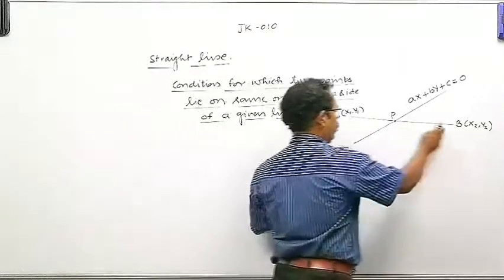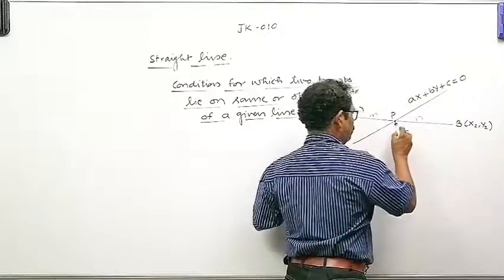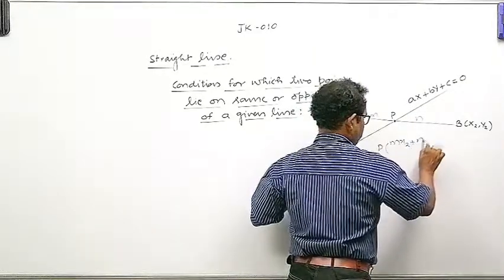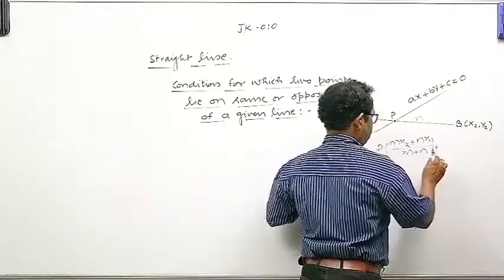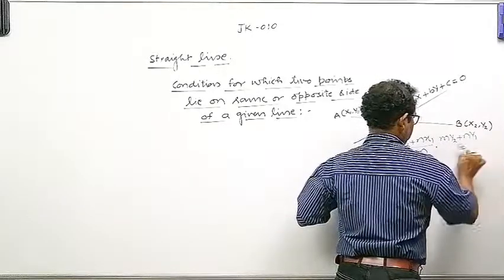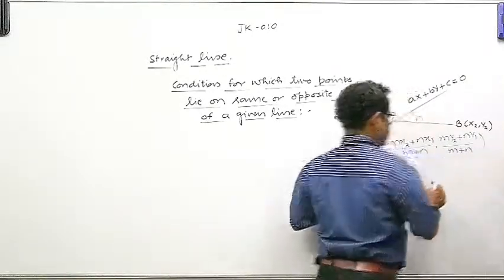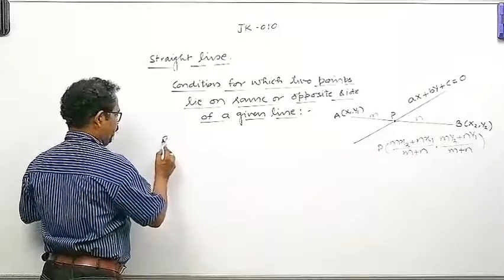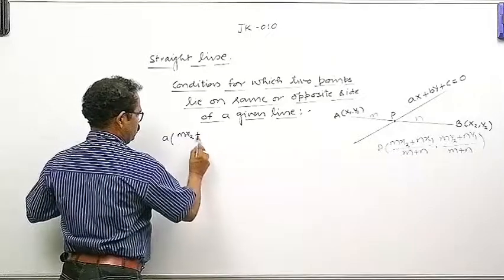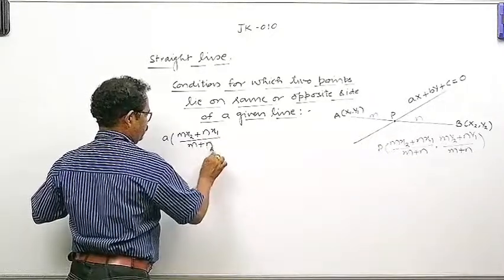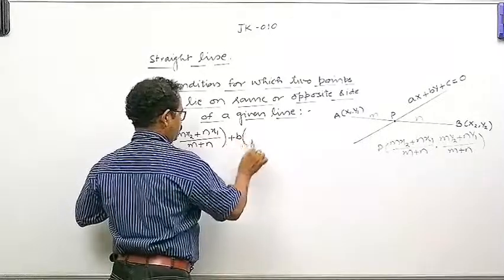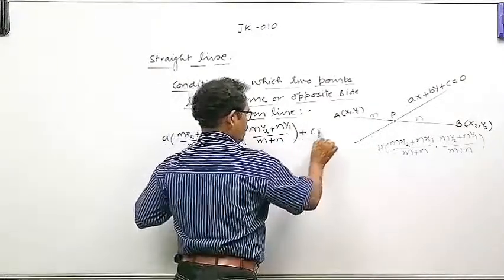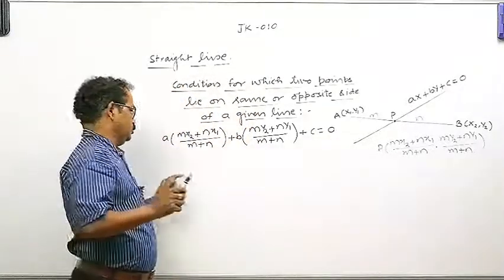Opposite side अगर ये point lie कर रहे हैं, तो ये ratio m और n का होगा. P point, in this case, is mx2 plus nx1 upon m plus n, and my2 plus n y1 upon m plus n. अब p point is lying on this line, so it will satisfy: a times mx2 plus nx1 upon m plus n plus b times my2 plus ny1 upon m plus n plus c is equal to zero.